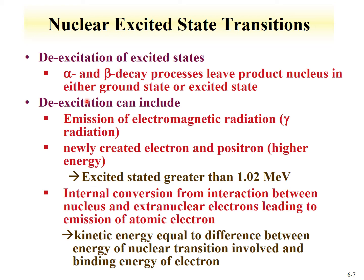When nuclei decay by alpha or beta processes, the transition from the parent to the daughter state can leave the daughter in an excited nuclear state — that's what we've been discussing with gamma decay. There are other routes accessible for this de-excitation. If the de-excitation is from a very high energy state, generally well above 1 MeV, a proton-electron pair can be created, so pair production can also occur. There's also internal conversion from interactions between the nucleus and atomic electrons, where atomic electrons are emitted.